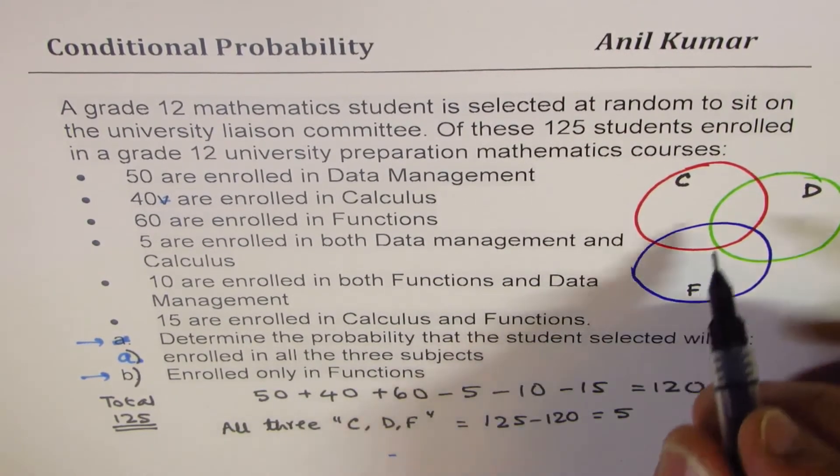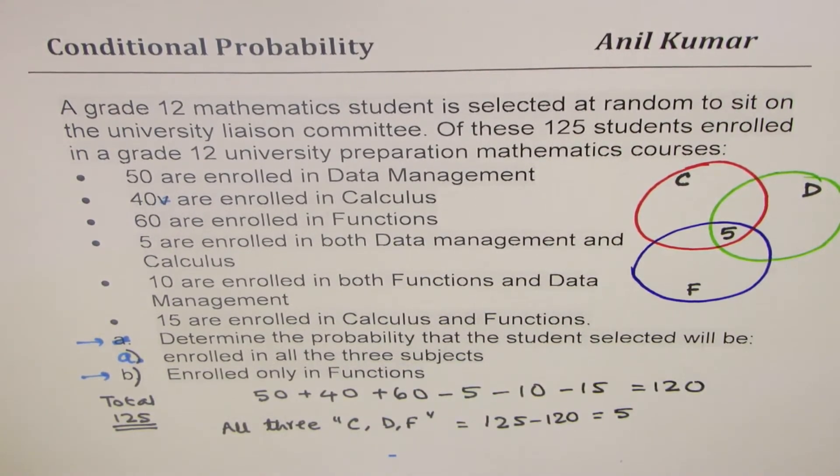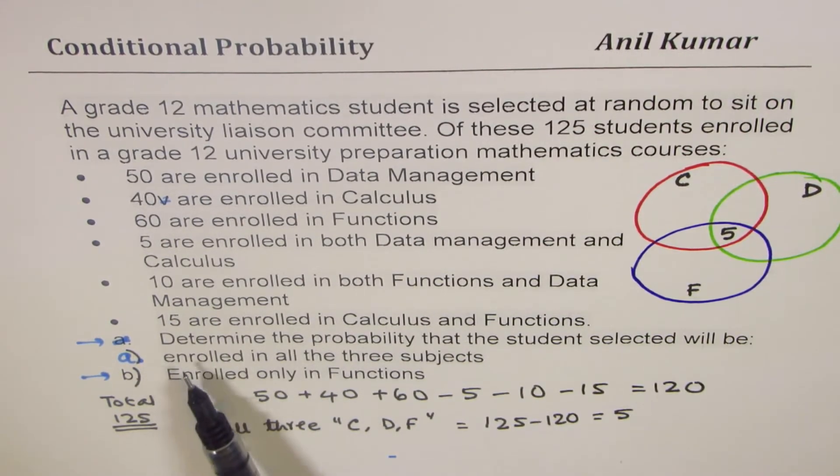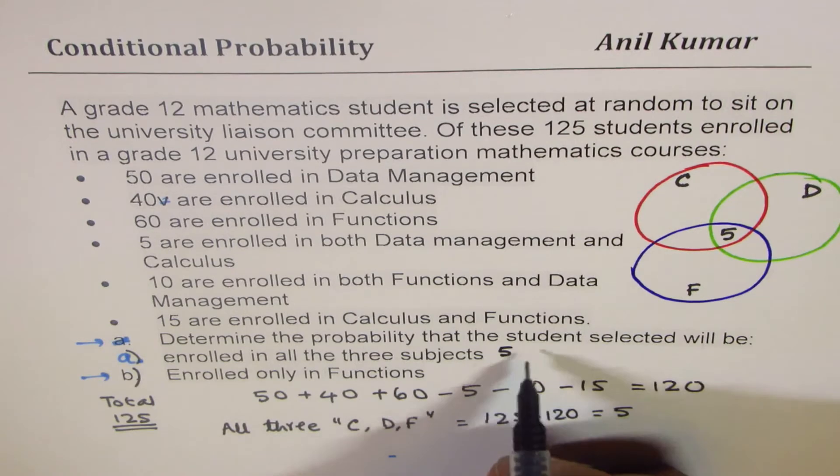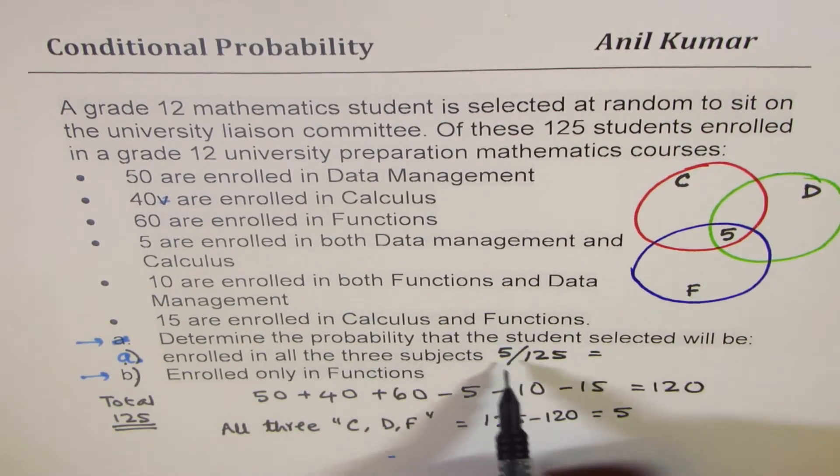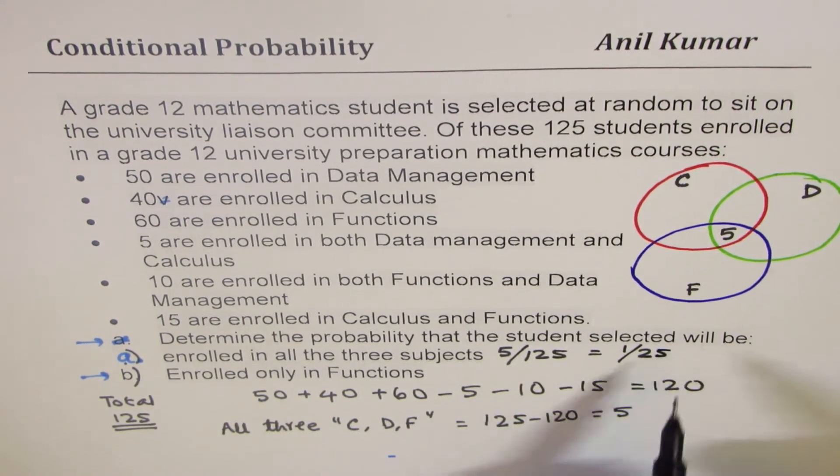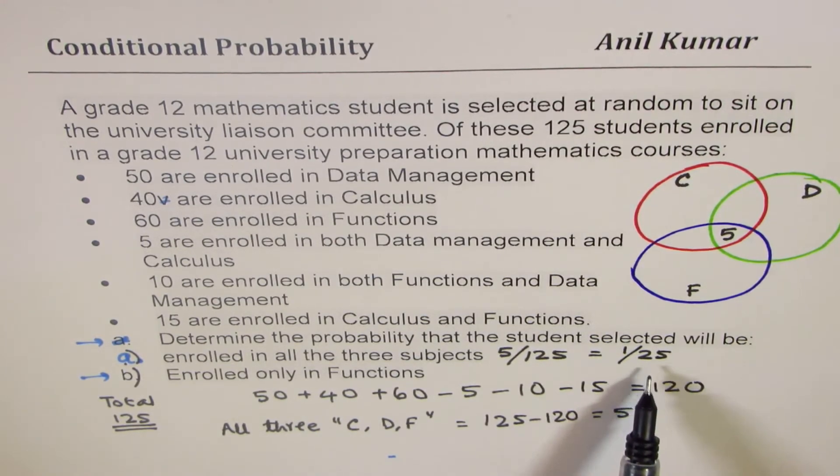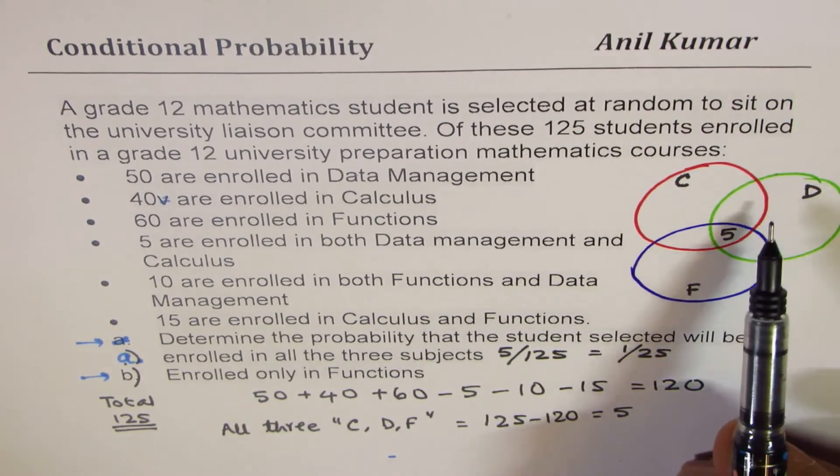Do you see that? So, this number 5 is common. Five students have taken all the three math subjects. Therefore, we get the answer for the first one, which is enrolled in all three subjects is 5 out of 125. That's the probability of A. Dividing by 5, we get 1 over 25. That's the probability of a student which has taken all the three subjects to be selected at random.